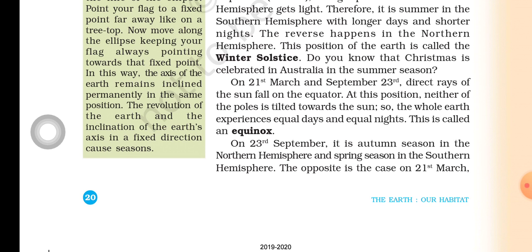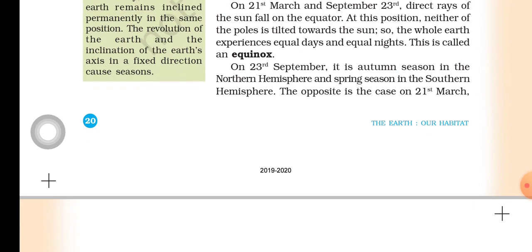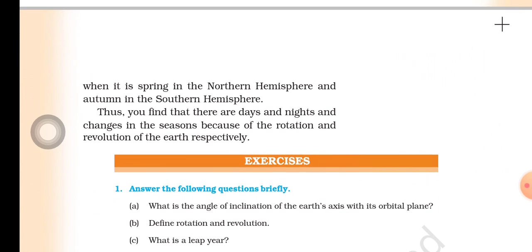On 23rd September, it is autumn season in the northern hemisphere and spring season in the southern hemisphere. The opposite is the case on 21st March, when it is spring in the northern hemisphere and autumn in the southern hemisphere. Thus, days and nights and changes in the seasons occur because of the rotation and revolution of the earth respectively.